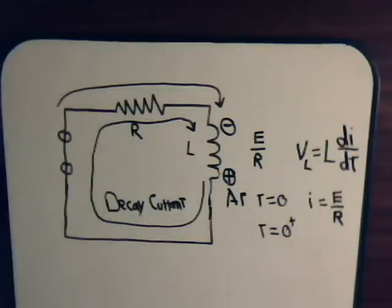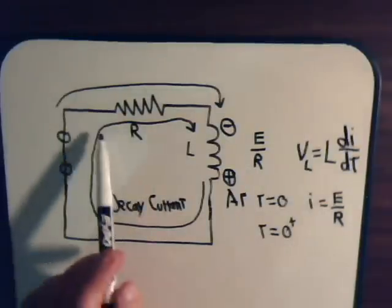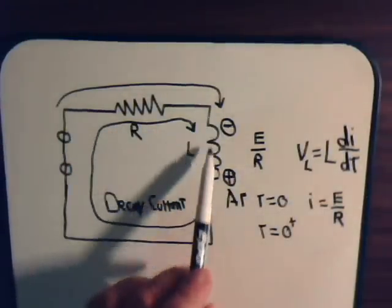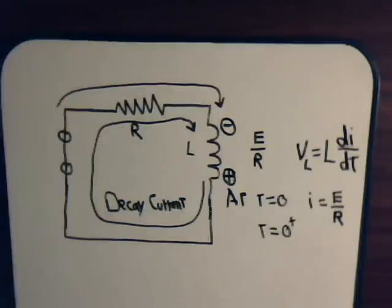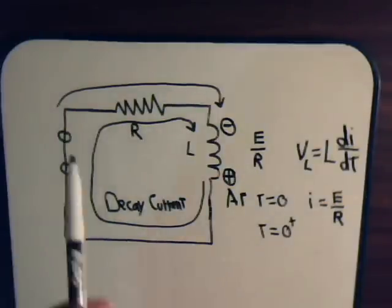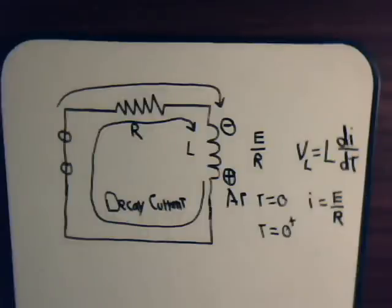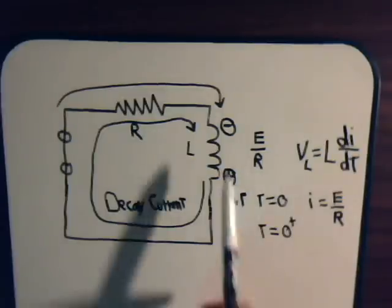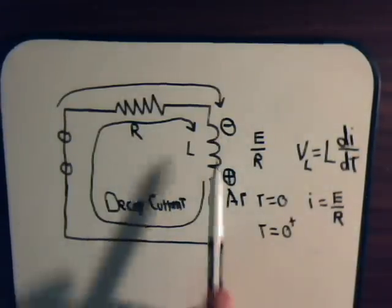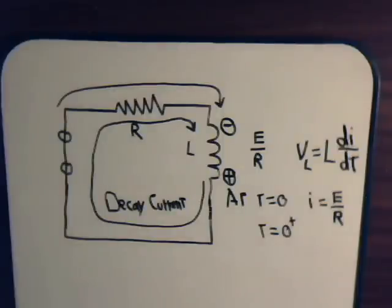Notice that the direction of the decay current through the resistor and through the coil is in the same direction as what it was when the battery was hooked up to this circuit. So the direction of the decay current through our coil is the same as the direction of the growth current through the coil.